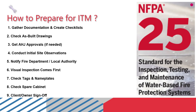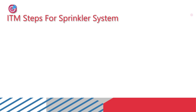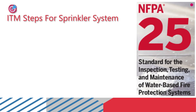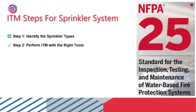Remember, good preparation isn't just admin work — it's your first step towards a successful and compliant inspection. Now let's talk through the five steps to properly perform ITM for sprinkler systems, whether you are doing it yourself or reviewing a contractor's work. Step one: identify the sprinkler types — start by knowing exactly what type of sprinkler heads are installed in each area of your facility.